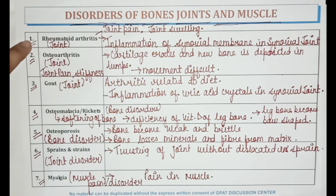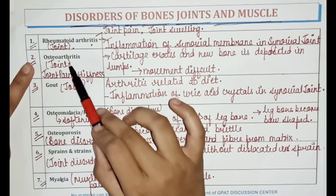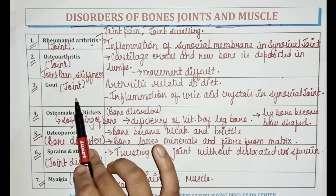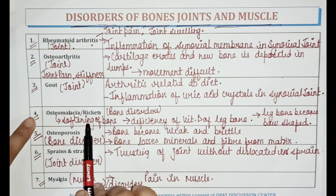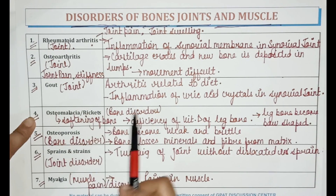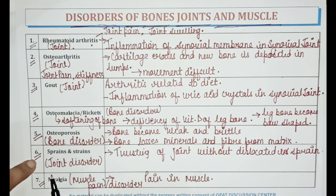In this video we have learned that rheumatoid arthritis is a joint disorder, osteoarthritis is a joint disorder, gout is also a joint disorder, osteomalacia or rickets is a bone disorder in which softening of bone occurs, osteoporosis is a bone disorder, sprains and strains is a joint disorder, and myalgia is a muscle disorder. Thank you for watching the video.